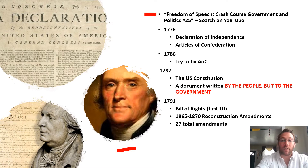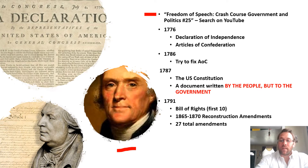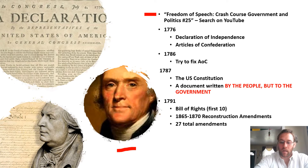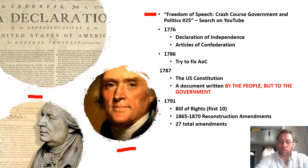This went on for about a year. It didn't work out. So in 1787, they said, OK, we need to scrap the Articles of Confederation and create a new constitution to hold the 13 colonies together. We create the US Constitution. The primary author was James Madison, who would go on to become a president.